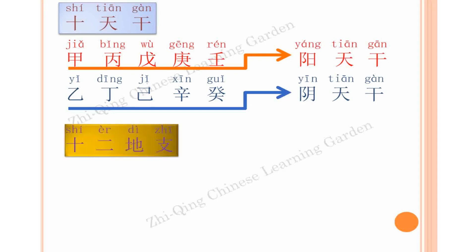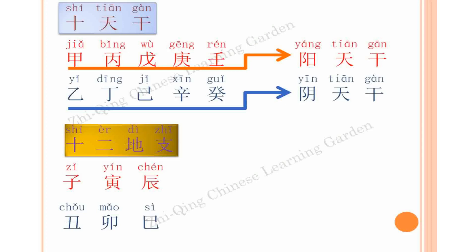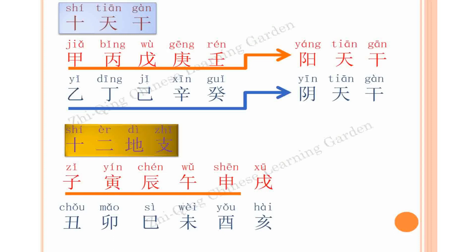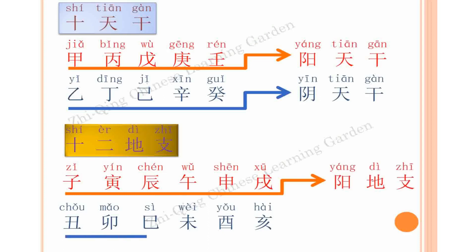The twelve earthly branches — 十二地支 — are: zi, chou, yin, mao, chen, si, wu, wei, shen, you, xu, hai. Yang di zhi and yin di zhi.